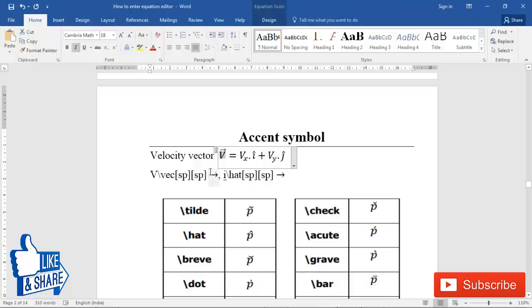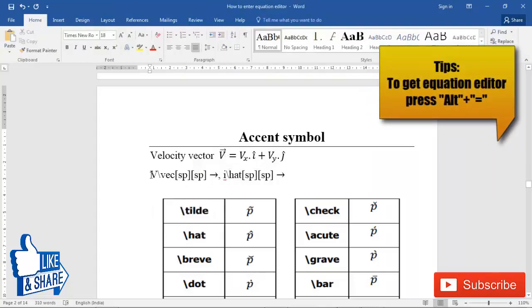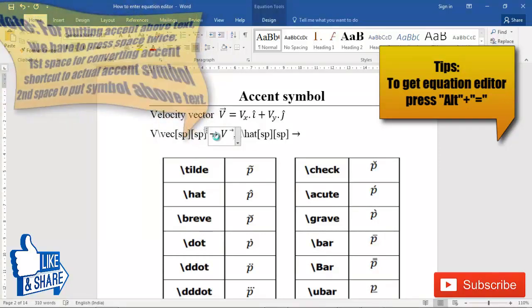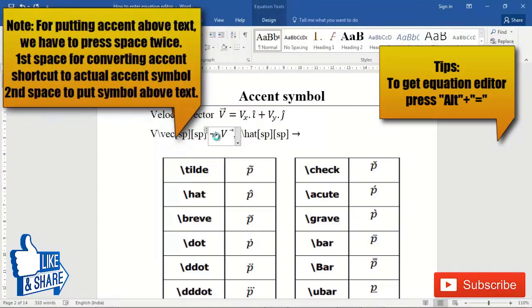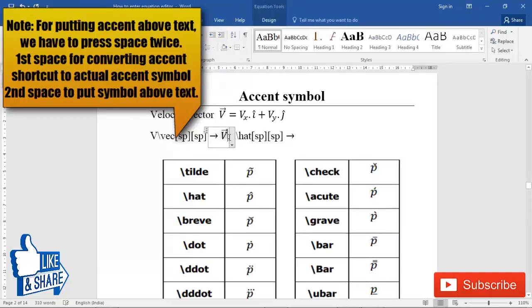To add an arrow above text, type vector v, then to have an arrow sign above, type v-e-c and press space. Two spaces are necessary: the first space converts vec into an arrow, and the second space places the arrow above vector v.